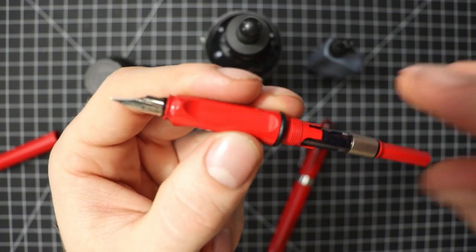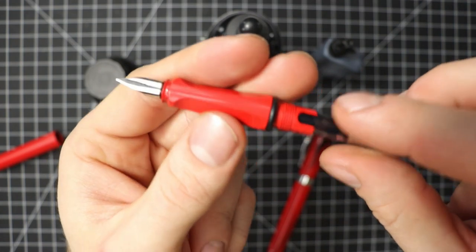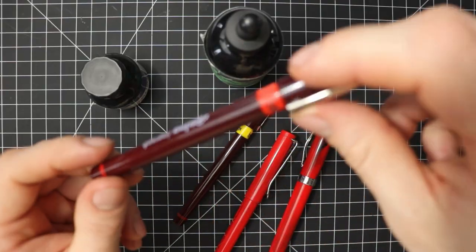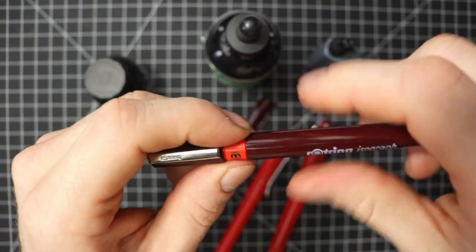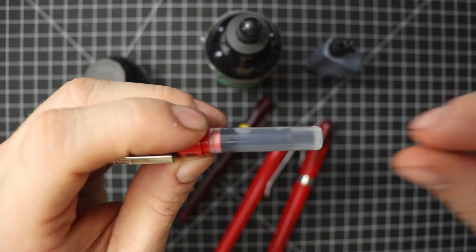You have some fountain pens that have a cartridge. Isographs, they have a reservoir that you can refill on the inside of it. You can see here.